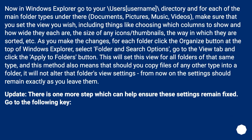Now in Windows Explorer, go to your \Users\username directory, and for each of the main folder types under there — Documents, Pictures, Music, Videos — make sure that you set the view you wish, including things like choosing which columns to show and how wide they each are, the size of any icons or thumbnails, and the way in which they are sorted. As you make the changes for each folder, click the Organize button at the top of Windows Explorer, select Folder and Search Options, go to the View tab, and click the Apply to Folders button. This will set this view for all folders of that same type, and this method also means that should you copy files of any other type into a folder, it will not alter that folder's view settings. From now on, the settings should remain exactly as you leave them.